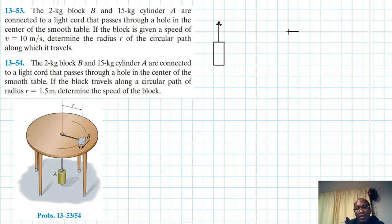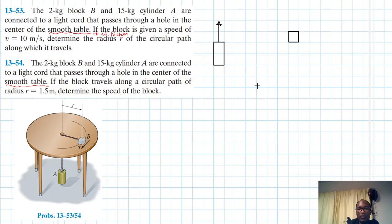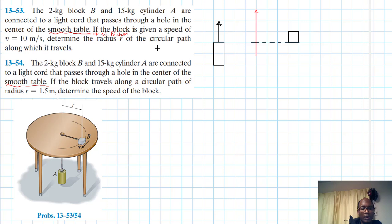This is the cord, so it will have a tension force, and we have a block on the smooth table. By smooth, it means there is no friction between the block and the table. Let's indicate the center, and this is our z-axis.